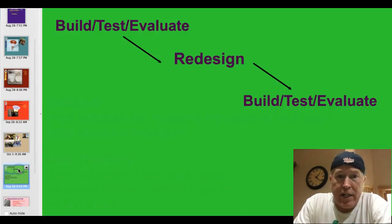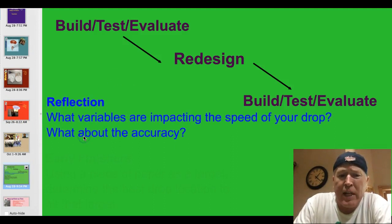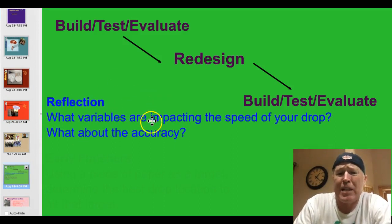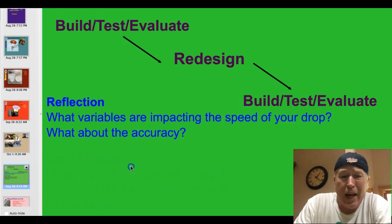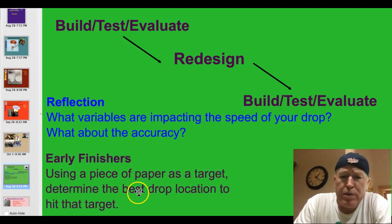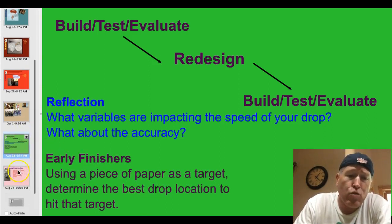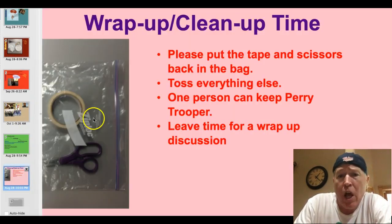Alright, moving forward. As you move through the collaborative design process, reflect upon these questions: What variables are impacting the speed of your drop? What about the accuracy? For early finishers, why don't you use a piece of paper as a target and see if you can determine the best location to hit that target, or the best drop location.